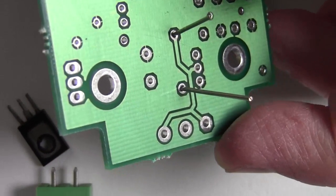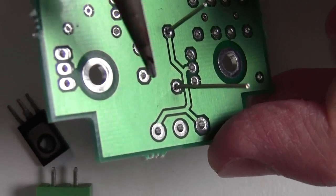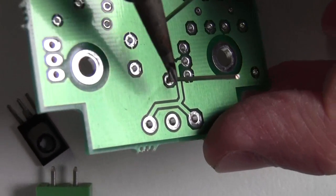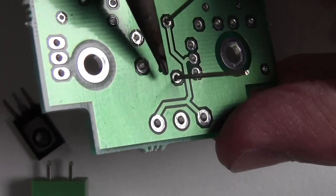You want to heat your iron anywhere between 330 to 370 degrees Celsius, or 630 to 700 degrees Fahrenheit. I find 330 degrees Celsius is probably the best.